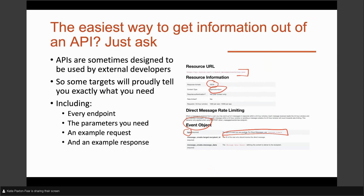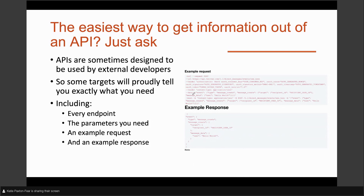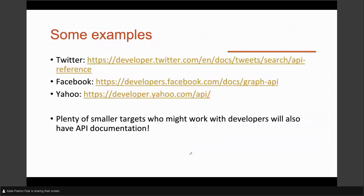Very easy security testing. Here's an example request and response — you can see how to actually send a message, what the data is in the HTTP request body, and an example response. That tells you what's normal, all the parameters, all the endpoints — it takes the guesswork out of things. Twitter, Facebook, Yahoo all have these kinds of API documents. Plenty of smaller targets who work with developers will also have API documentation.